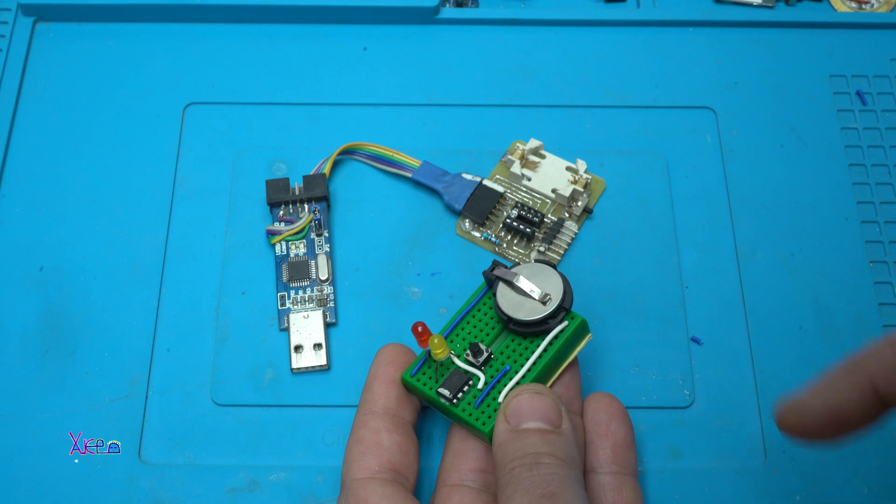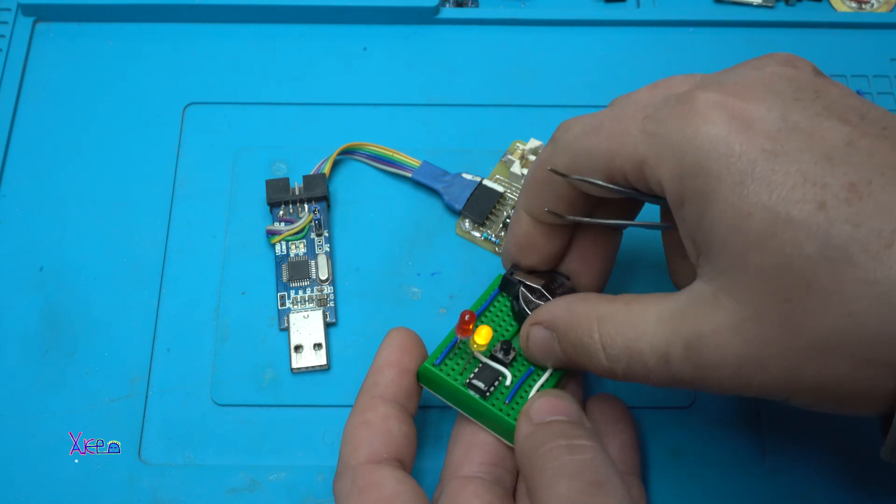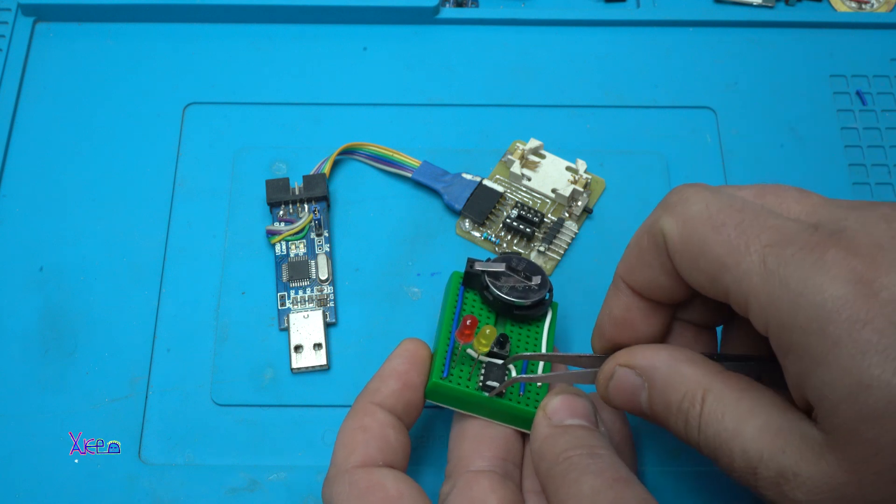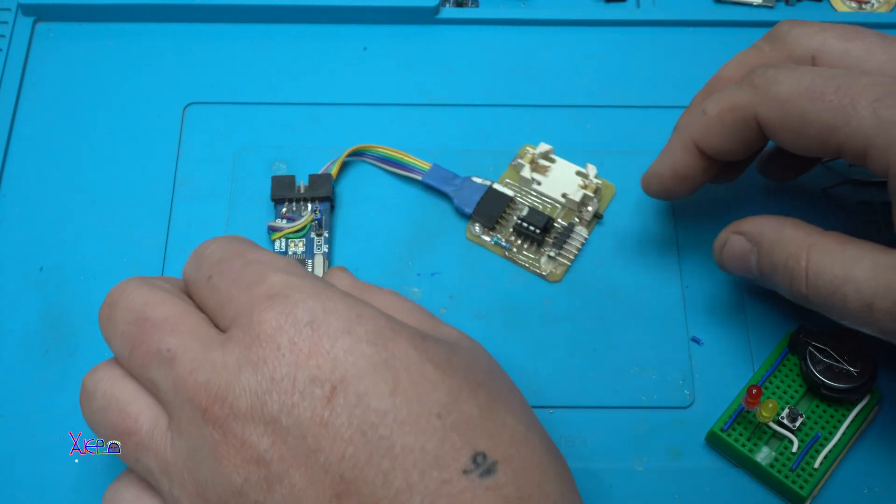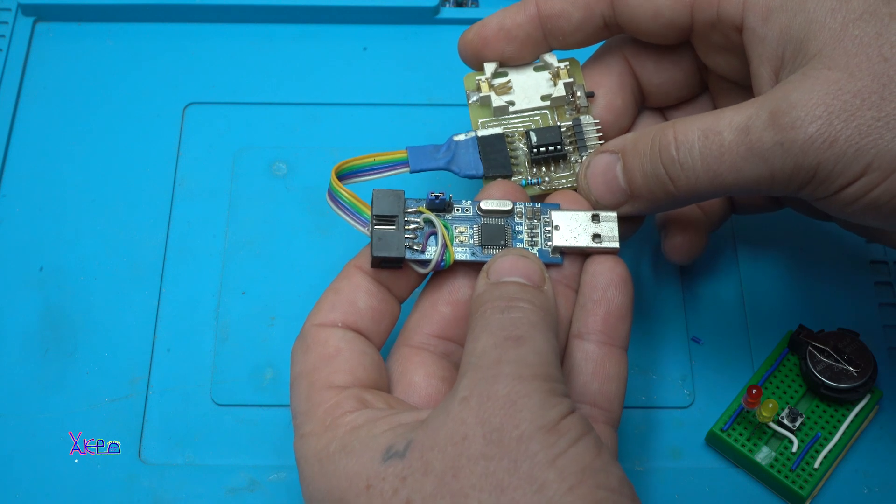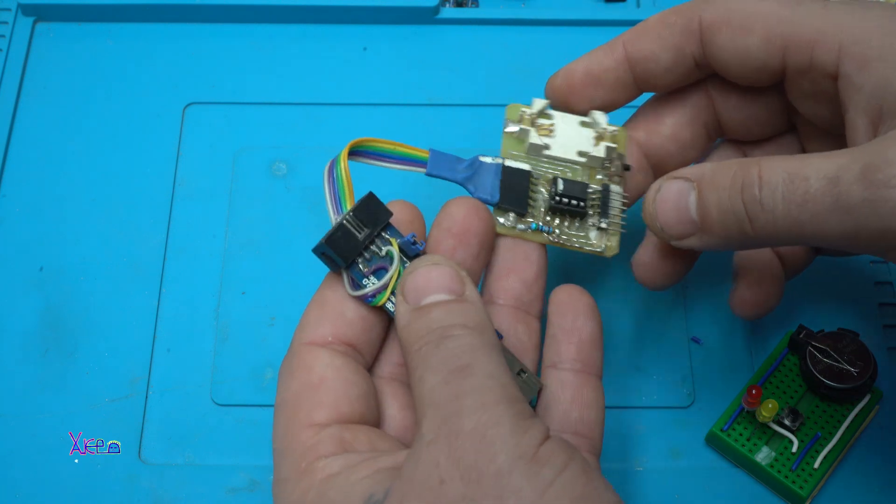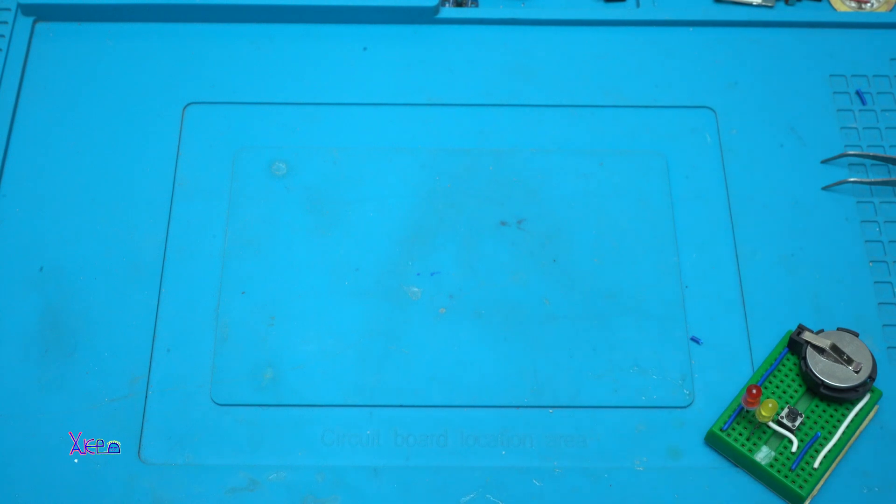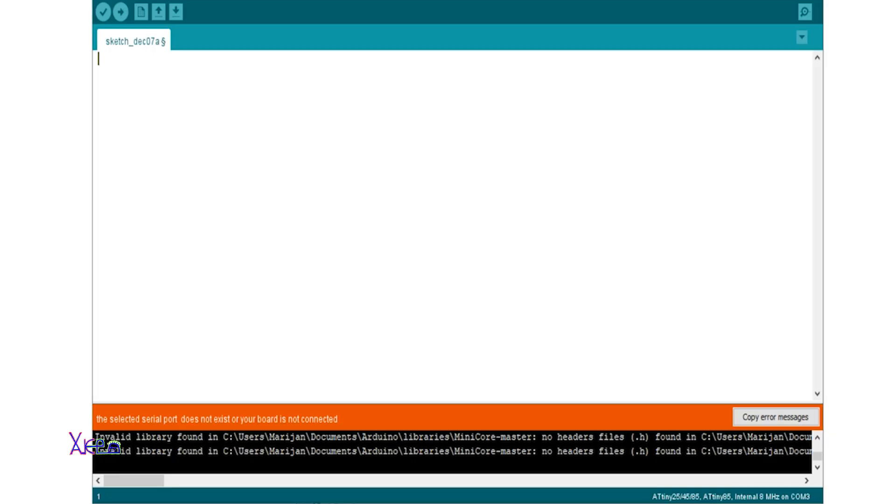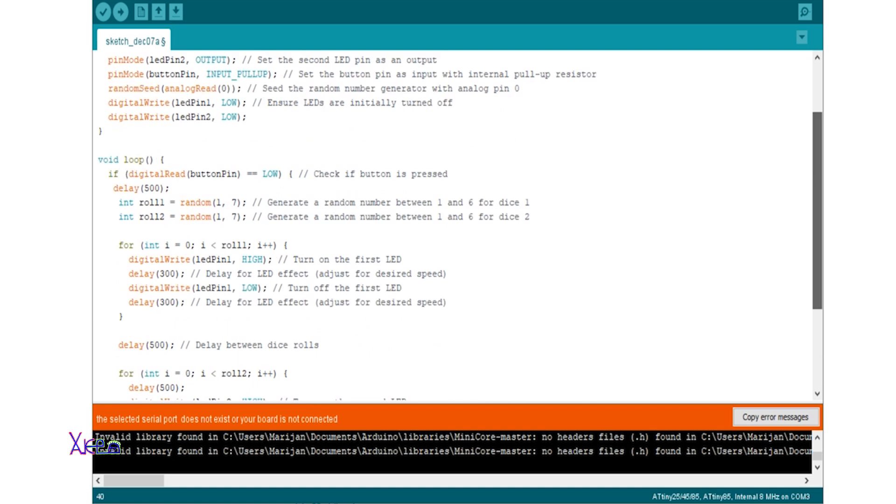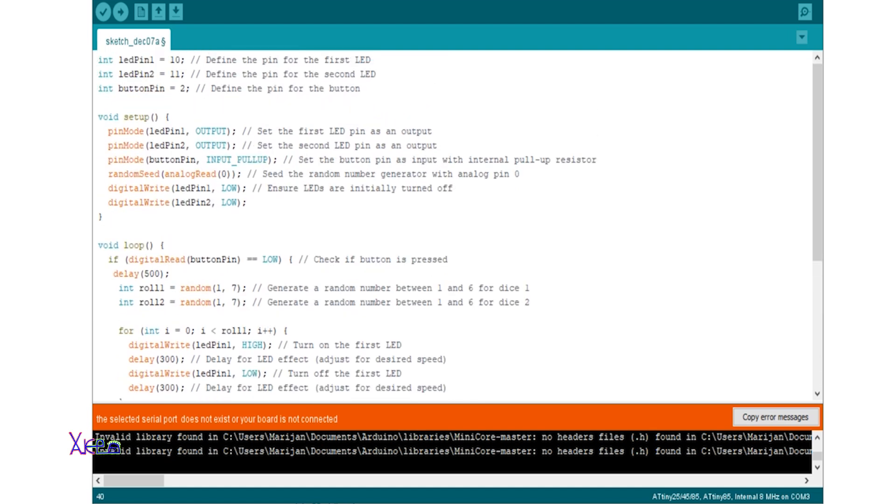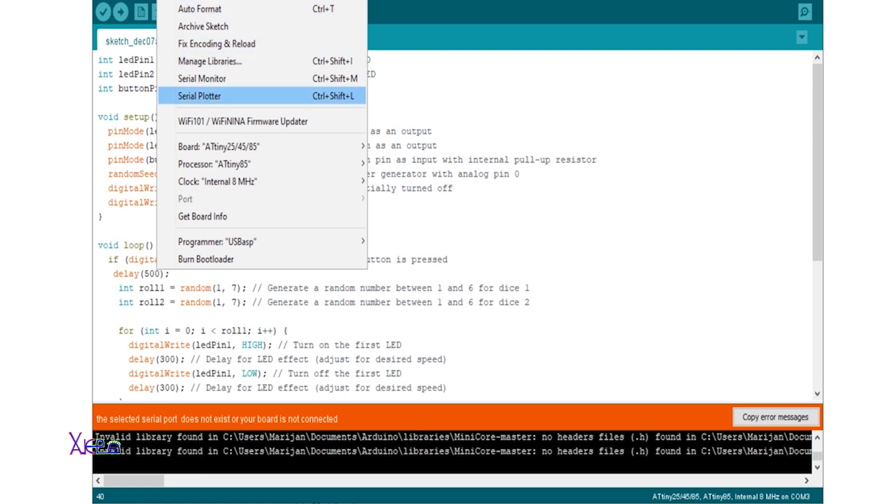How I upload new codes to the ATtiny85. First, I disconnect the battery, remove the chip, place it on my programmer, USB ASP programmer, plug into the USB of the computer. Next, you need to copy and paste the code into Arduino IDE software. Please check that this ATtiny85 board is selected and then hit upload.